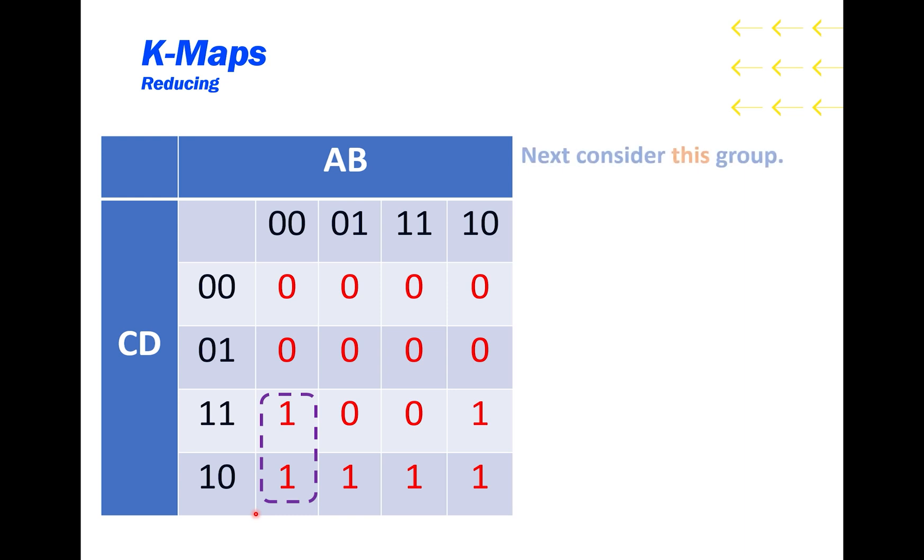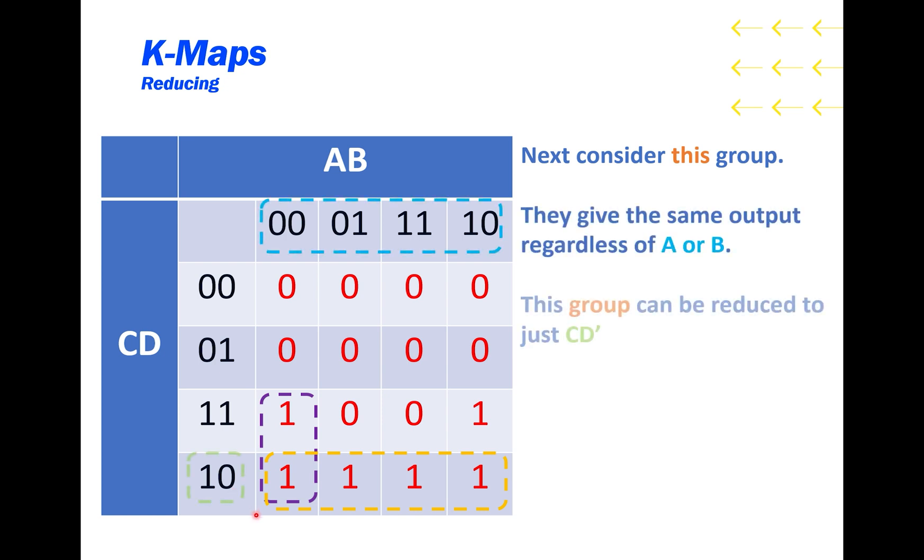Next, let's consider this group. This group shows that when the inputs include C and D', the output does not depend on A or B. This group can be reduced to just CD'. In order to have a complete function, we have to map all of the outputs, so we need to include just one more output to finish the function.